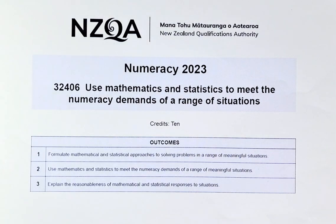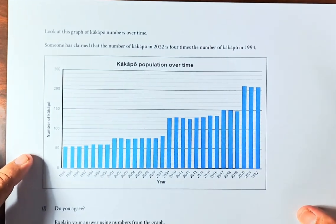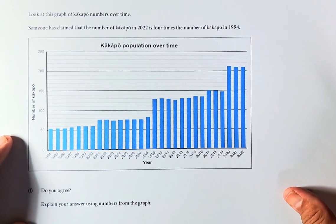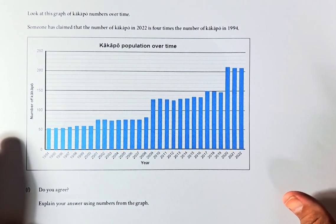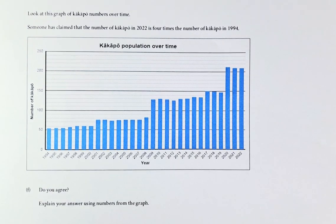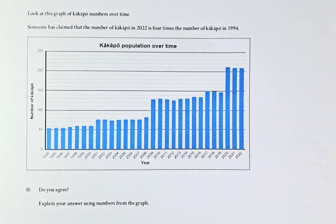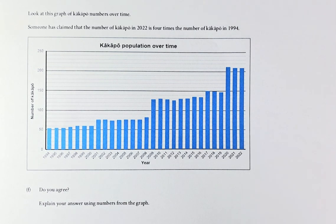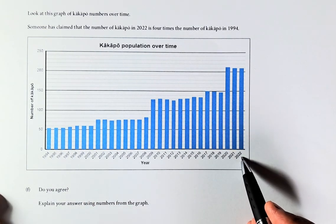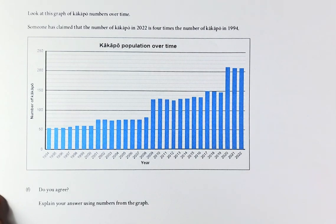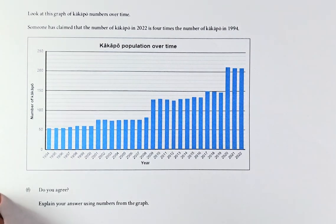2F is Outcome 3 and 2G is Outcome 2. Let's read the question. Look at the graph for Kakapo numbers over time. Someone has claimed that the number of Kakapo in 2022 is 4 times the number of Kakapo in 1994. So 1994 is the start and 2022 is at the end. Do you agree? Explain your answers using numbers from the graph.